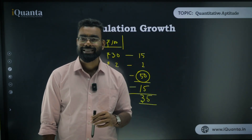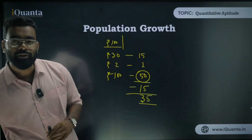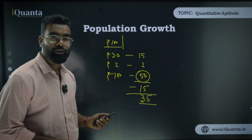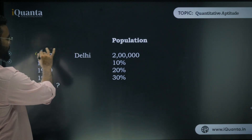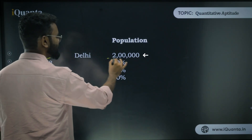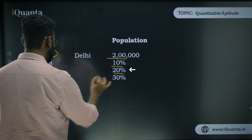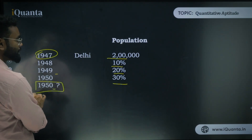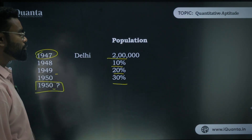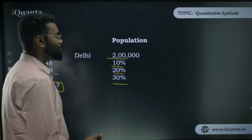Now let's go to population growth, and then we'll move into the five PYQ questions — that's all for today's session. Let's say the population of Delhi in 1947 is 2 lakhs; 1948 has a 10% increase, 1949 a 20% increase, and 1950 a 30% increase. We need to find the population at the end of 1950.